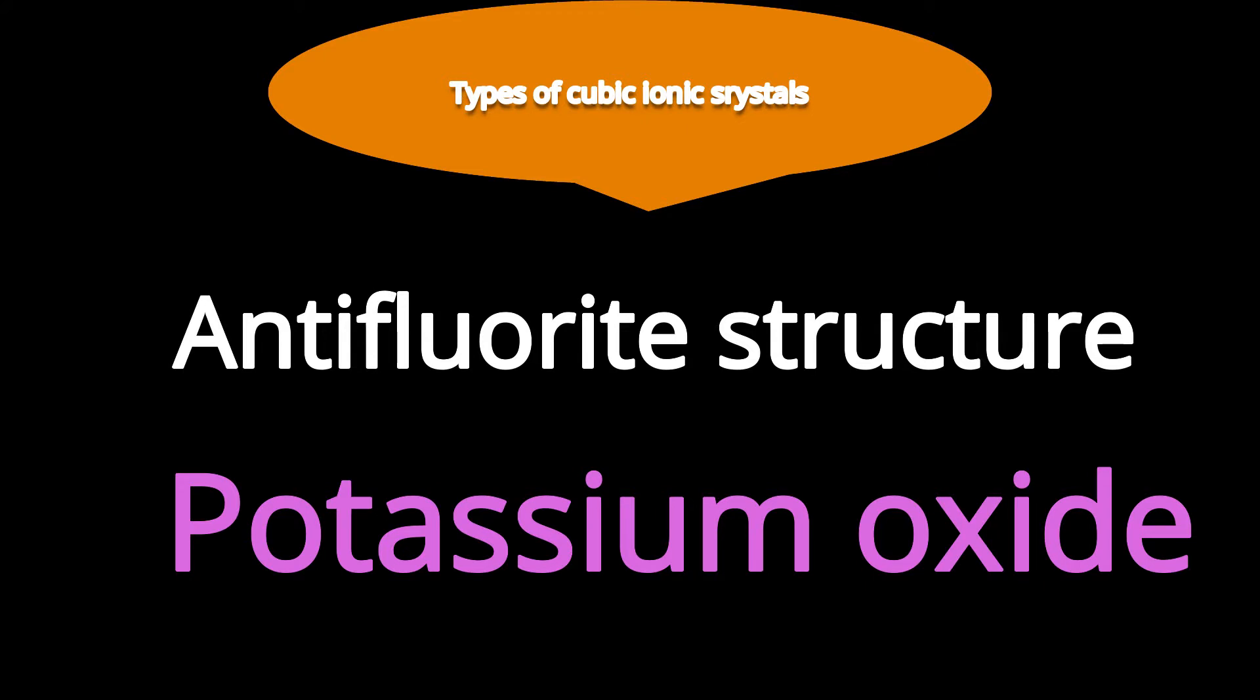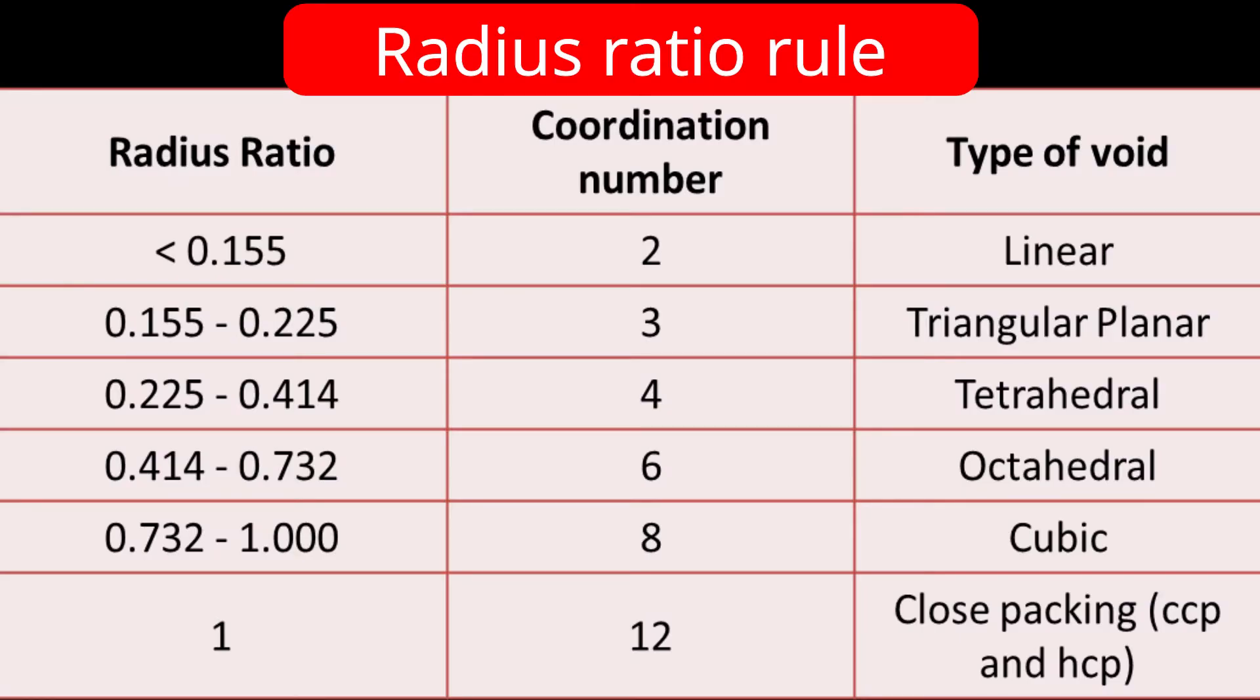Let us discuss one of the important structures, antifluoride structure, and as an example, potassium oxide. We are applying radius ratio rule to explain the structure. Before the actual explanation of the structure, let us know what is that radius ratio rule.